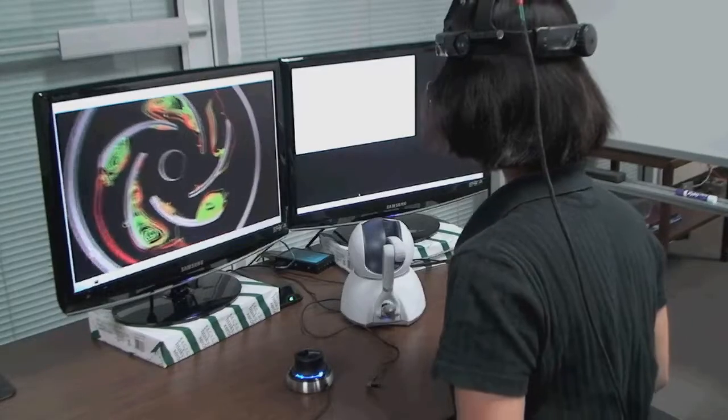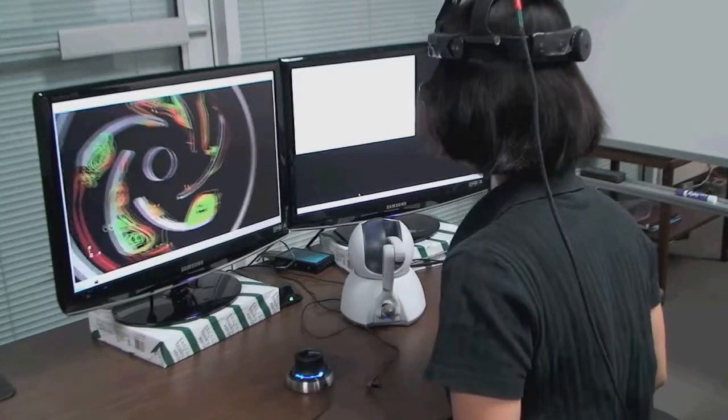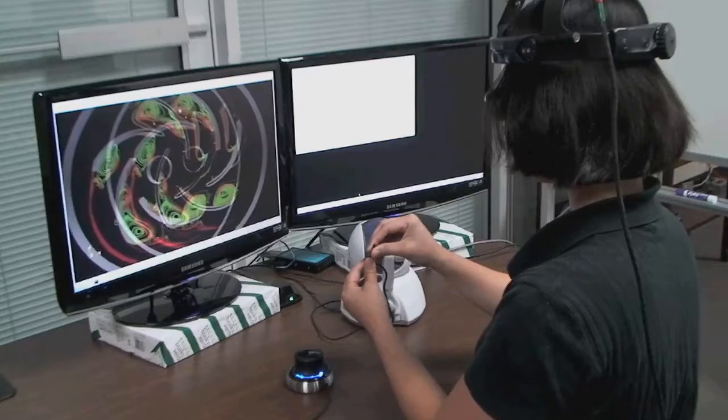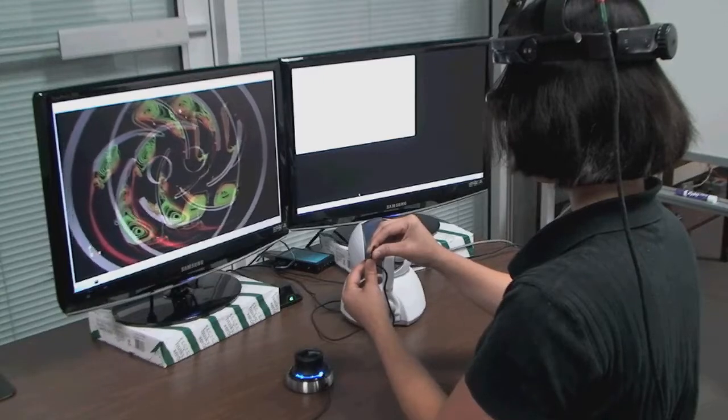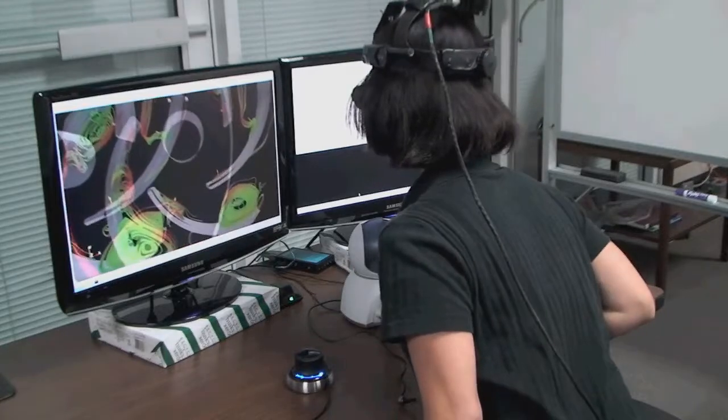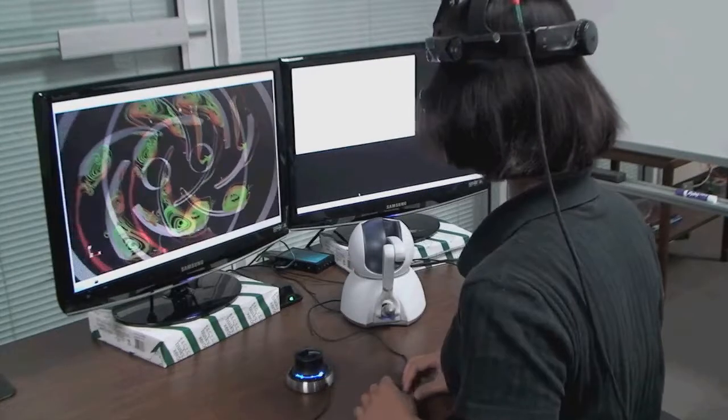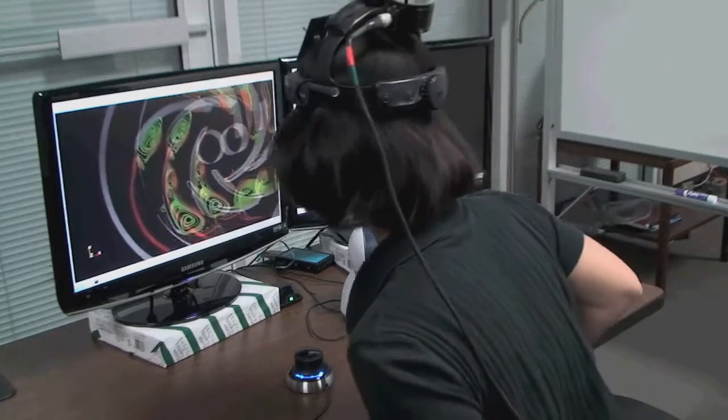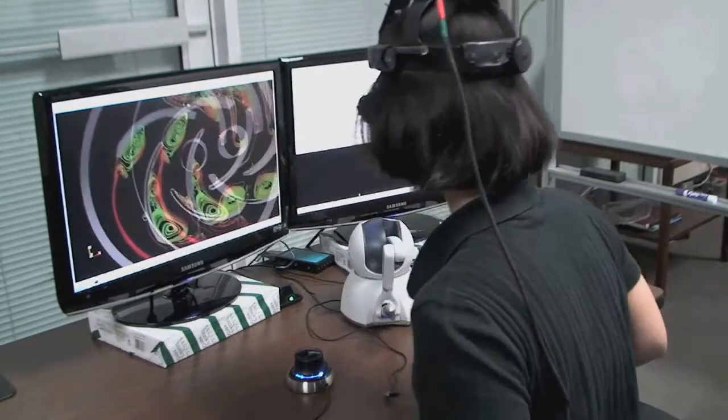The workbench renders a perspective-corrected viewpoint based on the user's head position, as tracked by the head tracker. Complicated flow structures can be better understood with the aid of kinetic depth perception, which is provided by the perspective-corrected rendering, and the stereo depth perception, which is provided by the stereo glasses.